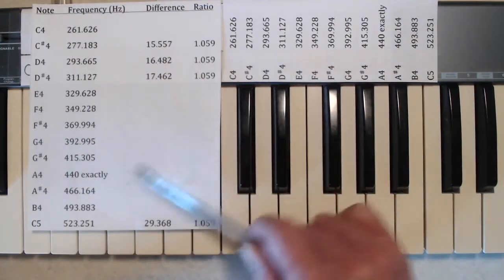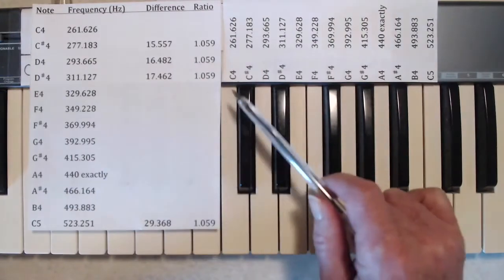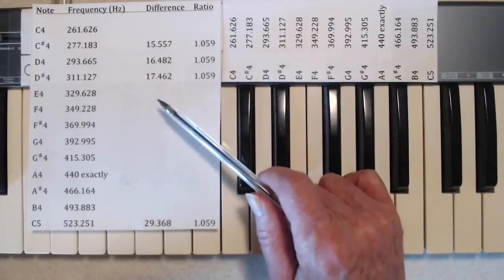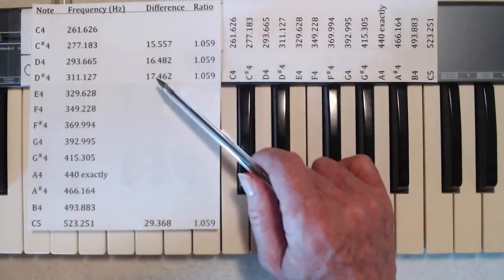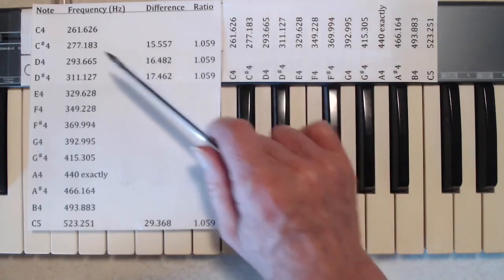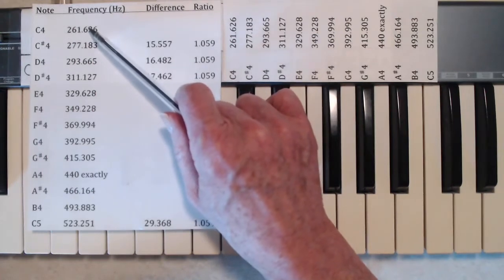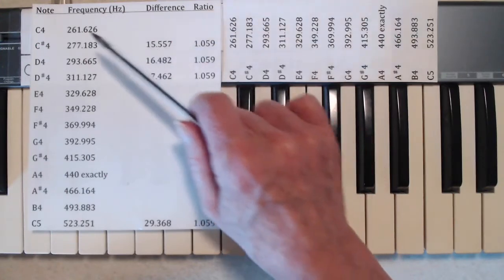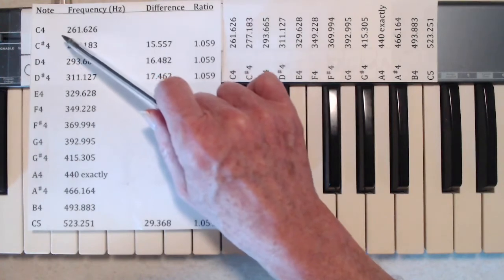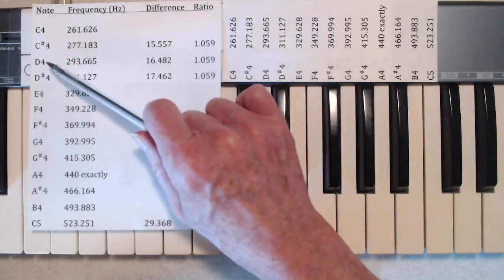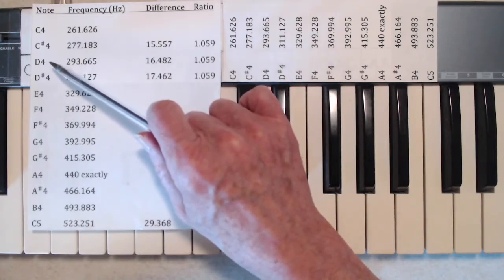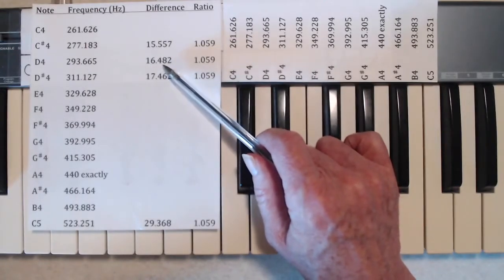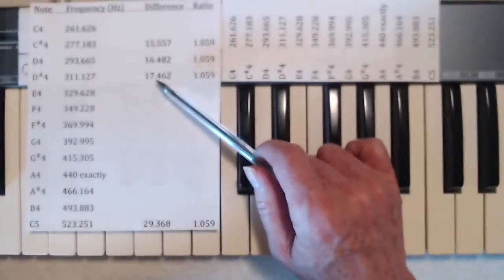Take a look at this chart where we've got the same notes as here, just written as a column and the frequencies again. And what I've done here is figure out the difference in frequency. In other words, this number take away this number. So that gives us a difference of 15.557 hertz between the C sharp 4 and the C4. If we now move to the next note up, D4, and take the difference of these two frequencies, we get 16.482. The difference of the next two is 17.462.